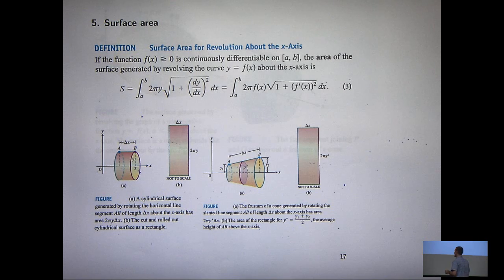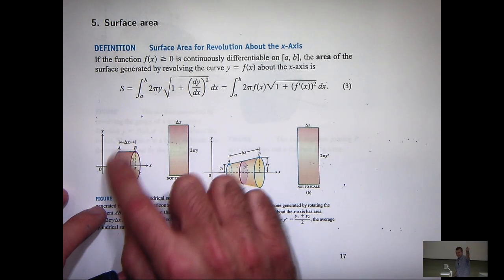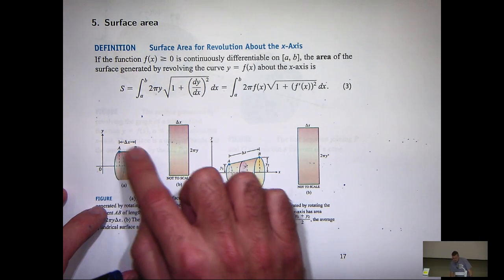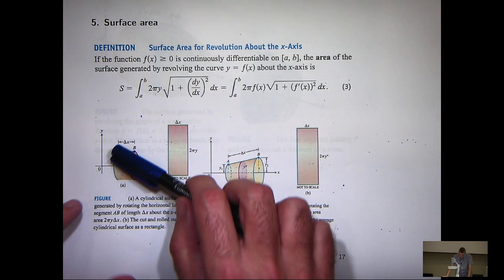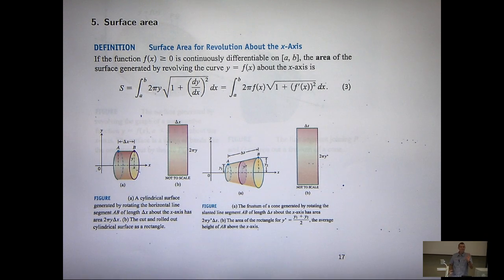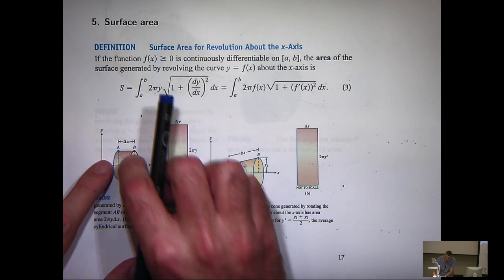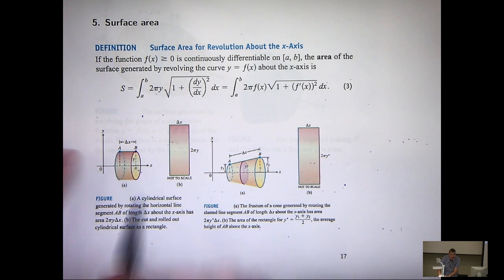Suppose that you've got this real simple surface here. You sort of rotate a little line segment around the axis. Think about the surface that it generates. Well, it's very easy to calculate the surface area just by unwrapping it basically and working out the area of this rectangle.